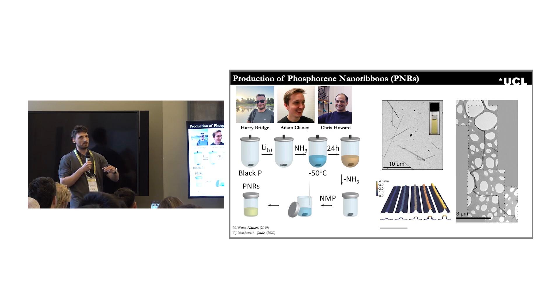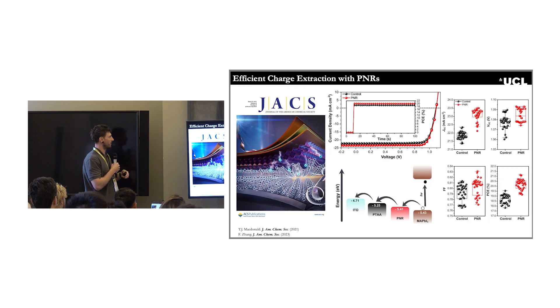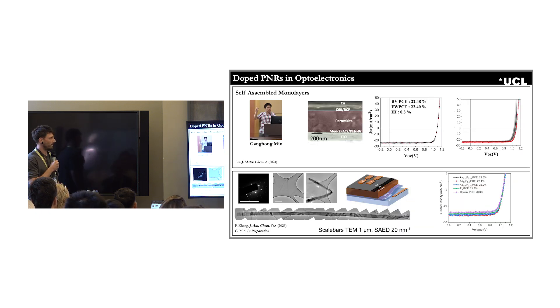My second PhD student, Harry, is actually working on this production right now. We're basically trying to expand on what we've already published on the efficient charge extraction using nanoribbons. Here was the first-ever example of phosphorene nanoribbons in optoelectronics, and we were able to definitively prove that they enhanced charge extraction within our optoelectronic device.